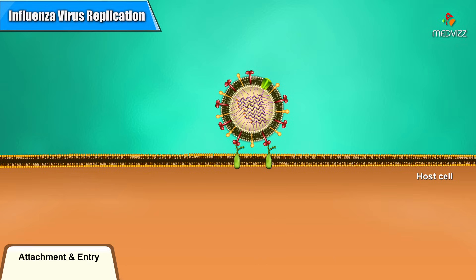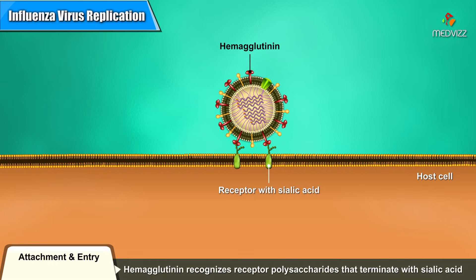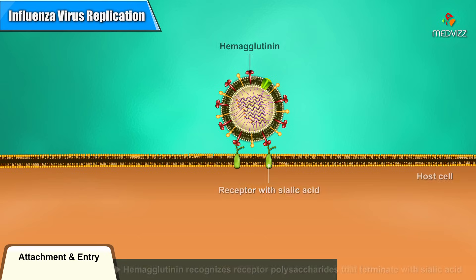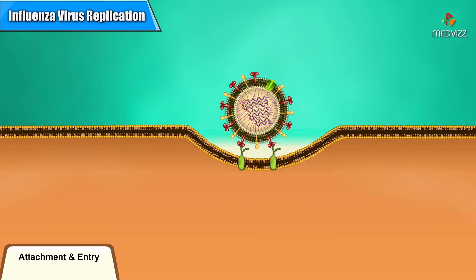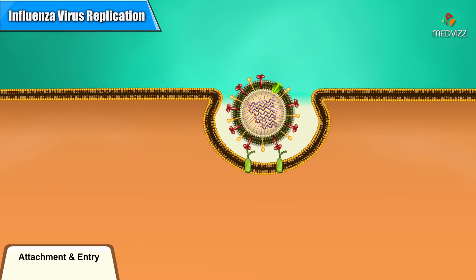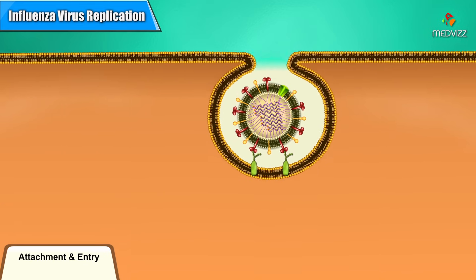An influenza virus attaches to a cell when hemagglutinin, one type of protein in its viral envelope, binds to a host receptor. Hemagglutinin recognizes receptor polysaccharides that terminate with sialic acid. The cell then takes up the virus by endocytosis.